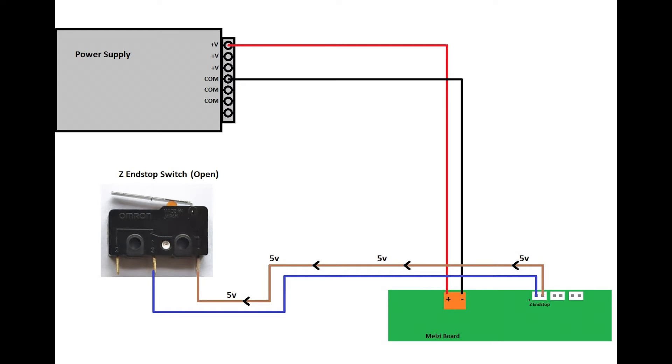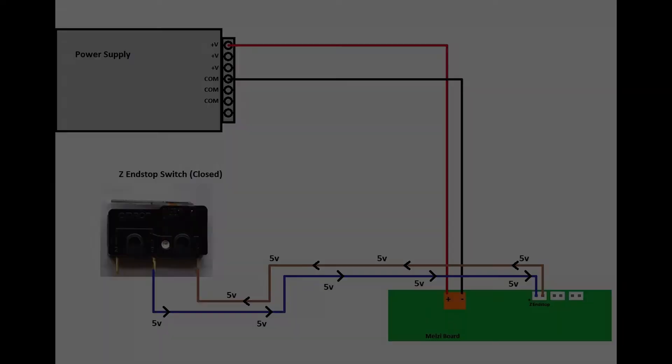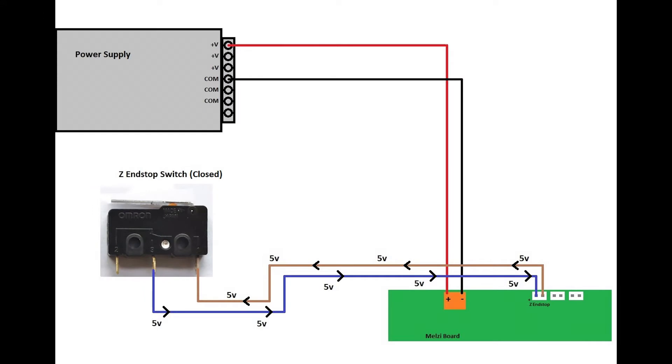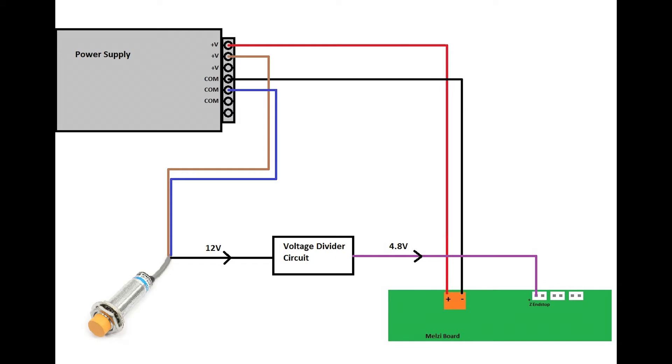Here's a diagram that shows how the end stop switch works on the printer by default, and here's what we're trying to accomplish with the auto bed leveling sensor. We're basically replacing the 5 volt signal coming from the negative pin on the end stop switch with the 5 volt signal coming from the sensor instead.